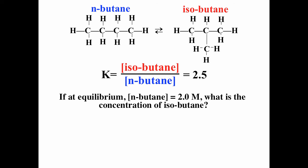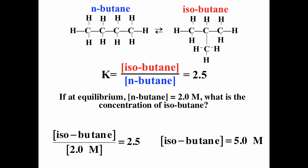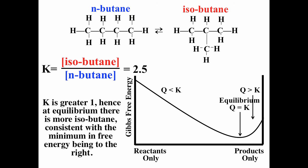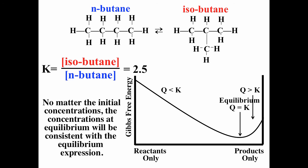If n-butane was 2, then isobutane has to be 5. Equilibrium constants give you the ratio of products over reactants — they don't tell you exactly how much you have, just that ratio. If K is greater than 1, you have more products because the products are more stable. The minimum is the most stable configuration, and no matter what the initial concentrations are, eventually you get to that minimum.